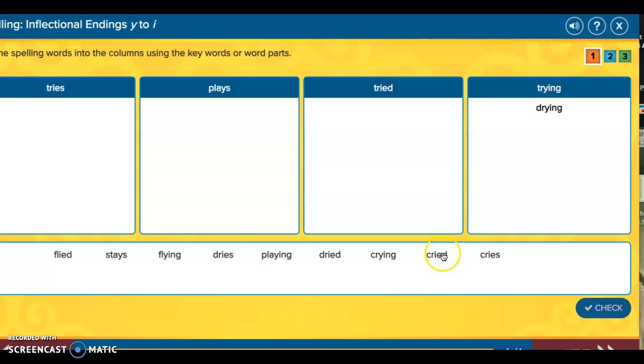Let's try another. Cried has i-e-d and I see i-e-d up here. And we need a word that ends with y and we added a suffix with an s. Is it flied, stays, dries, or cries? Which one do you think belongs in the box? Good. Stays.